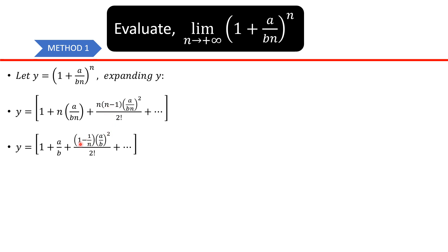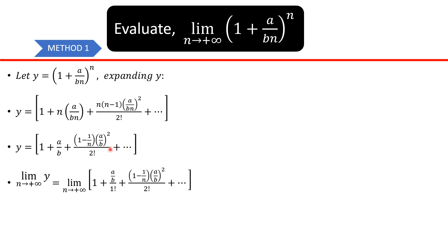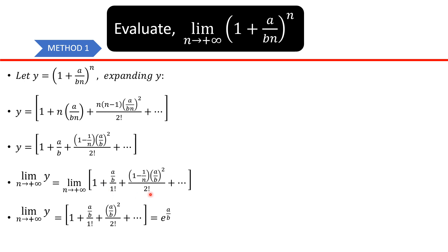So the limit as n tends to infinity of y simply means taking the limit as n tends to infinity of this entire expansion — that is, the limit as n tends to infinity of 1 plus this term plus all of that. The interesting thing to notice is that as n tends to infinity, the 1 over n term tends to zero, so that expression simply goes to 1.